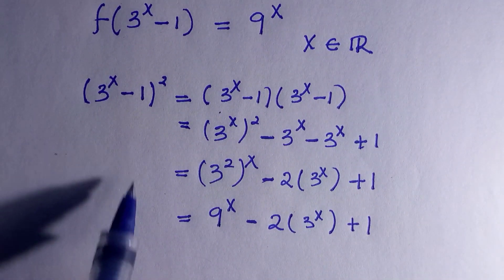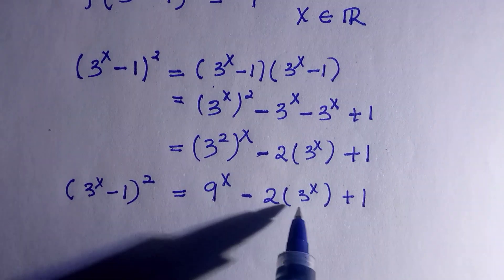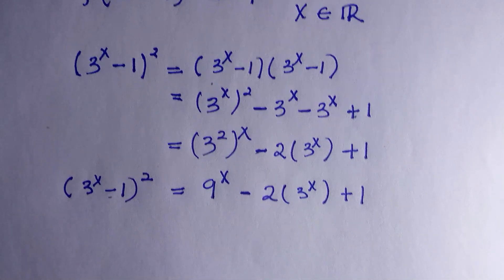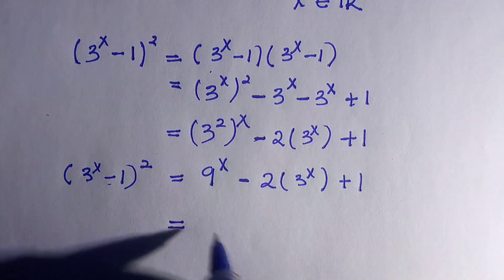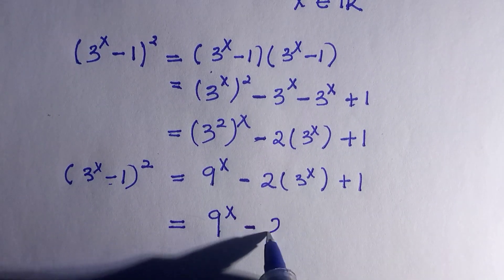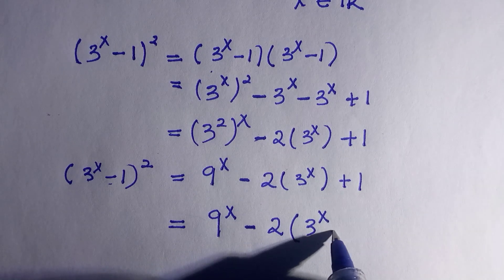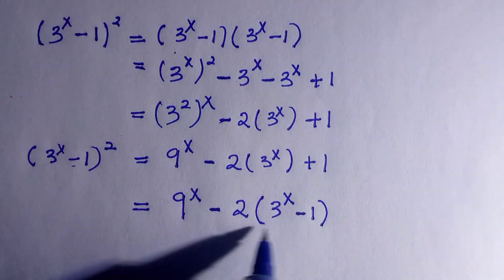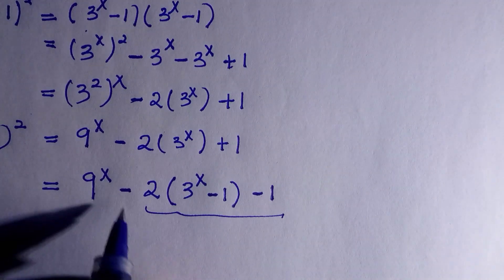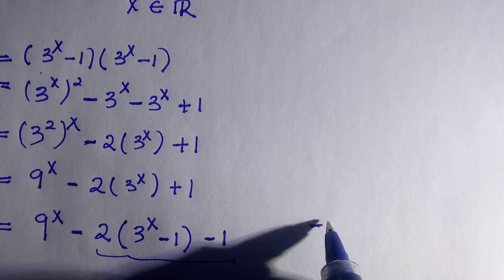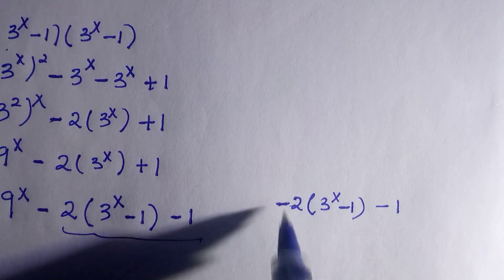So 3 to the power of x minus 1, everything squared, gives us the right-hand side expression. Now I want to make the left-hand side look exactly right. I'll apply: 9 to the power of x minus 2 times 3 to the power of x, plus 1. Expanding this confirms the equivalence.